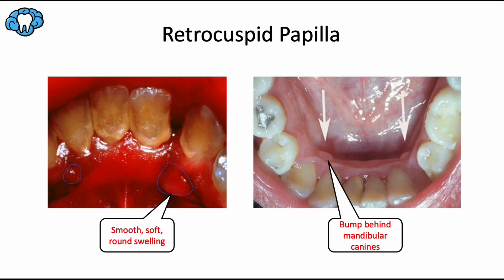Lastly, we have the retrocuspid papilla. A retrocuspid papilla is a smooth, soft, well-defined, round or oval swelling on the lingual attached gingiva near the mandibular canines, usually located just below the free gingival margin. They are found most commonly on both the left and right sides — another bilateral lesion — but are sometimes just on one side. It's usually pink or red, matching the surrounding gingiva, about 1 to 3 millimeters in diameter and height, and may appear as a dome-shaped nodule or a pedunculated lesion occurring on a stalk like the head of a mushroom.